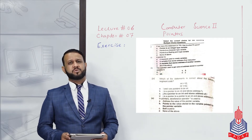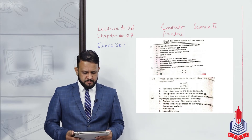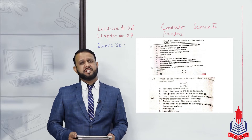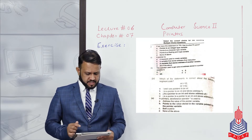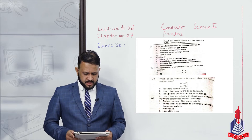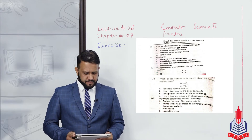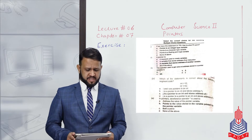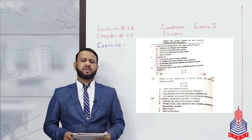Let's start the multiple choice questions. Our first MCQ: if we have the statement int *ptr, then what does ptr point to? We have four choices: alpha — points to an integer type variable; beta — points to a character type variable; charlie — points to a floating point variable; delta — none of these. The correct option is alpha: points to an integer type variable. Of course, since the pointer is integer type, we assign the address of an integer variable to it.